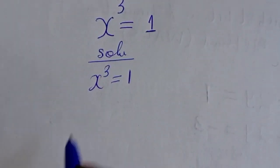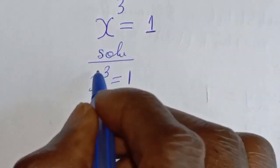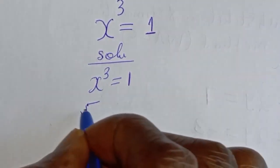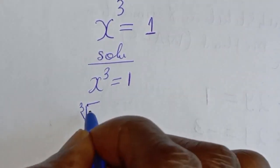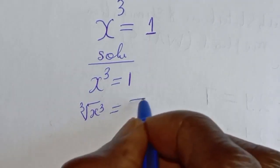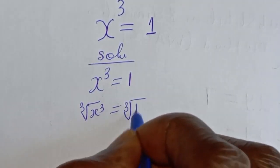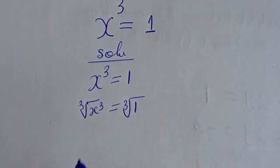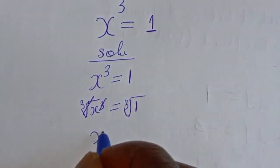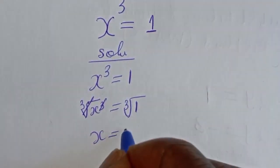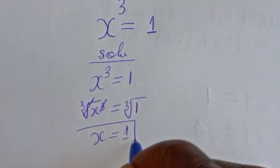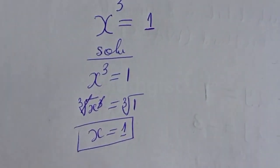Let's take the cube root of both sides. Cube root of s raised to power 3 is equal to cube root of 1. This will cancel. s is equal to cube root of 1, which is 1.